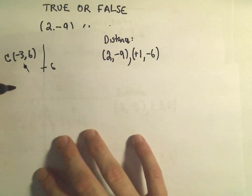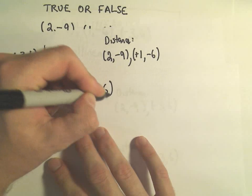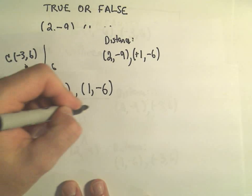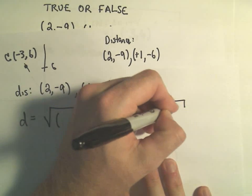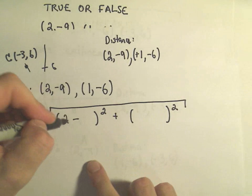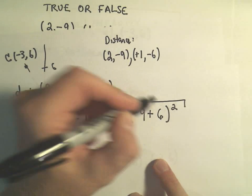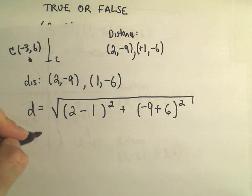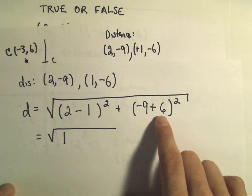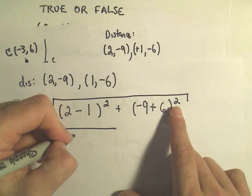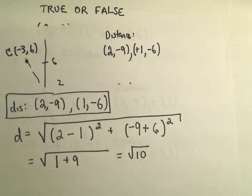So if we find the distance between these points (2,-9) and (1,-6), we're just going to have to use the distance formula, which says we subtract the x coordinates and square them plus the difference between the y coordinates squared. So I could take 2 minus 1, and then I could take -9 minus -6, which would actually make a positive 6. And if we simplify that, we're going to get 2 minus 1, which is 1 squared, which is 1. -9 plus 6 is -3. -3 squared is going to be positive 9. And I'm getting the square root of 10 as the distance between my first two points.